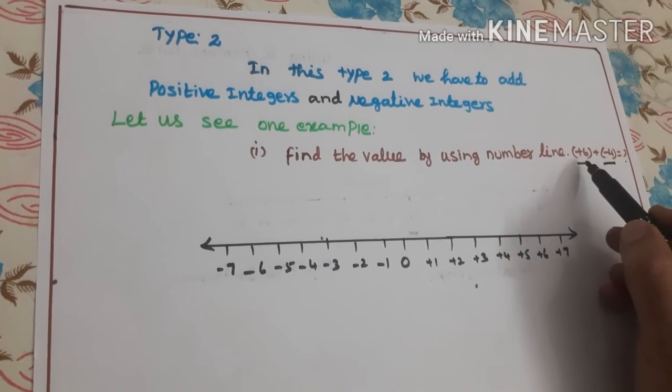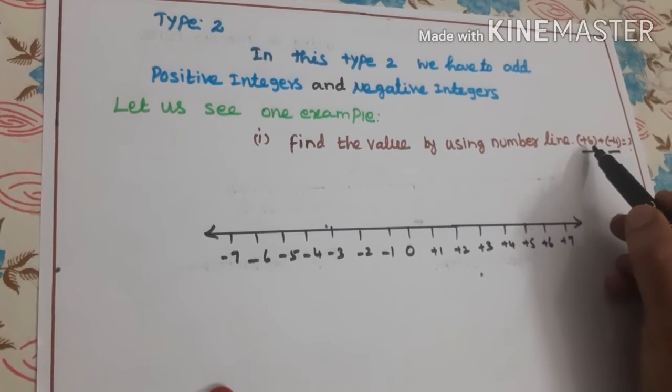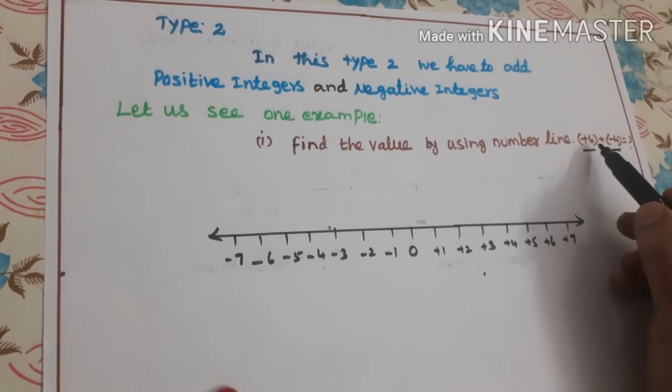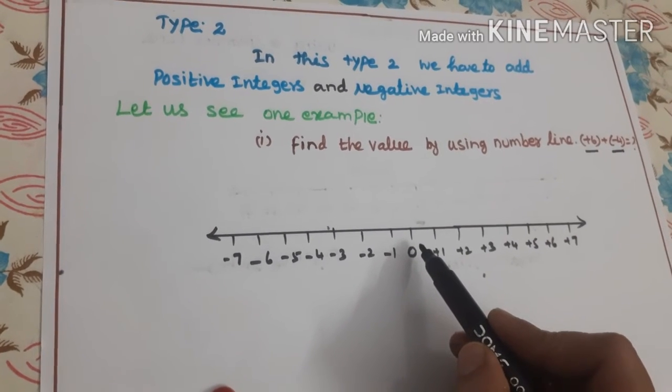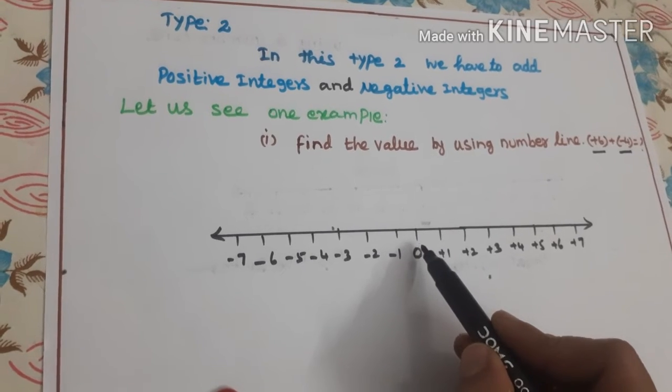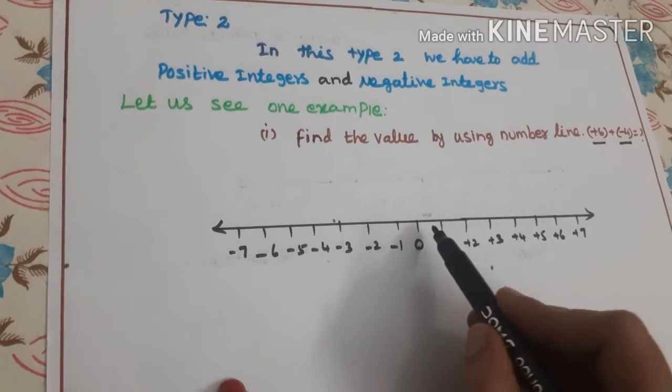The first number is positive 6. We have to start from 0. Whatever be the number, we have to start only from 0. So we start here.